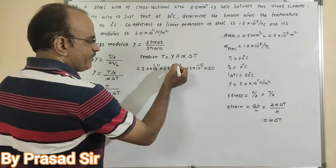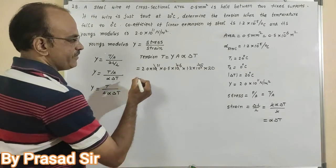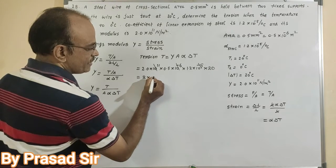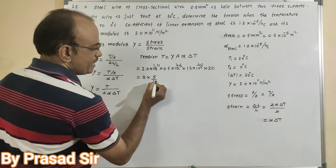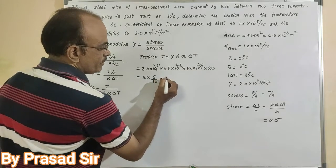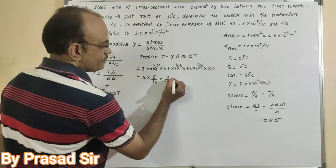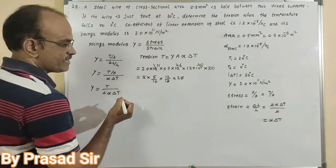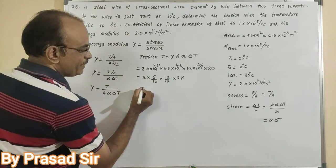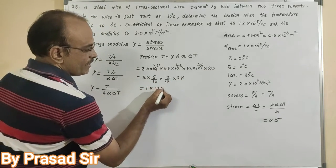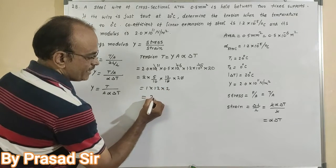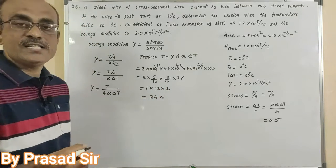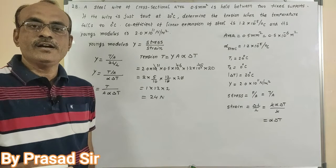10¹¹ and 10⁻¹¹ cancel. Then 2 × 0.5 gives 1, multiplied by 1.2 × 20 gives 24. So the tension is 24 Newtons. This is the solution for question number 28.